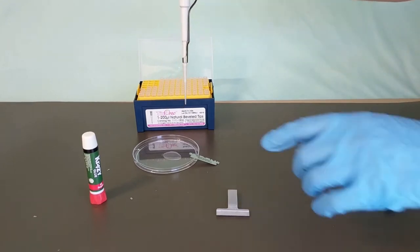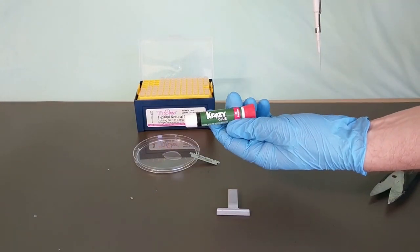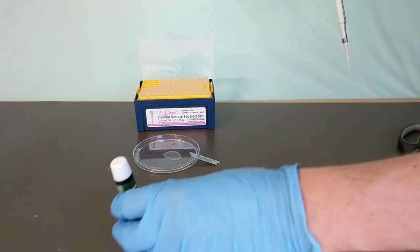Using the included crazy glue, pipette about 5 microliters of glue evenly along the blade holder.